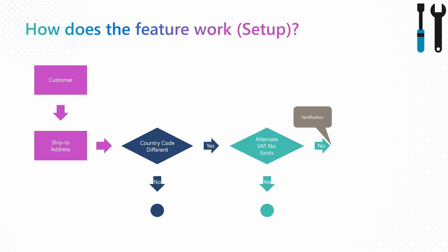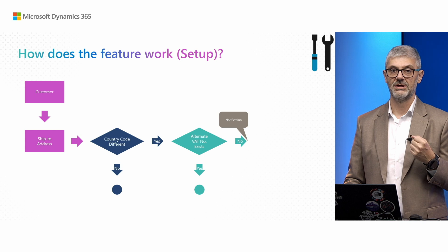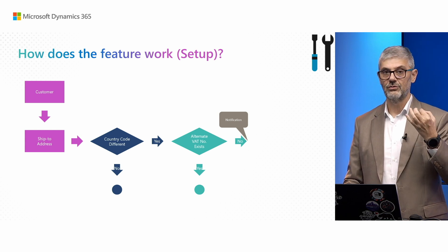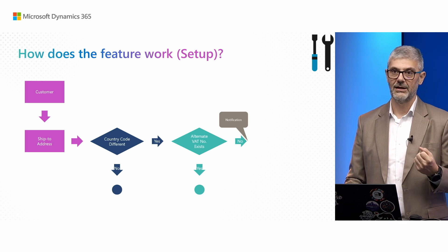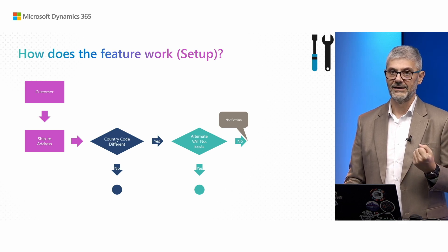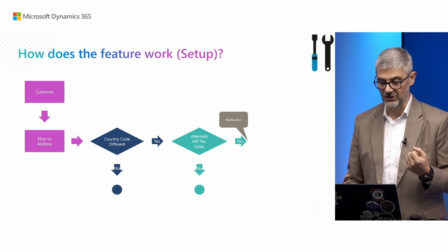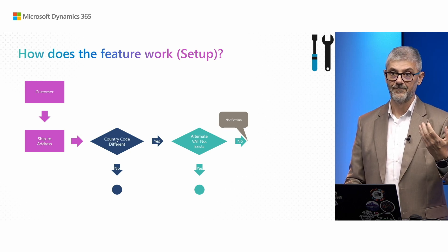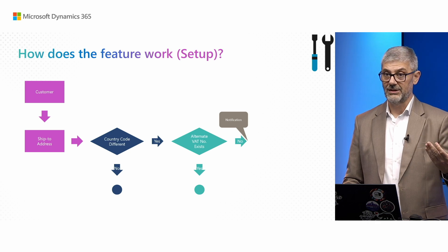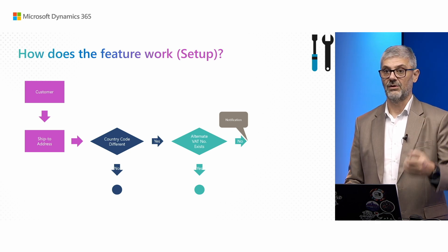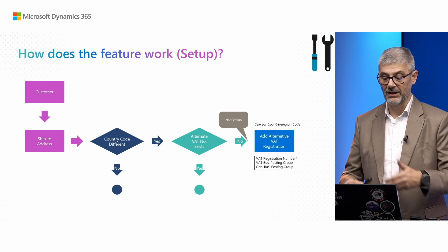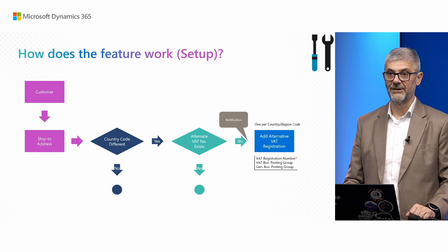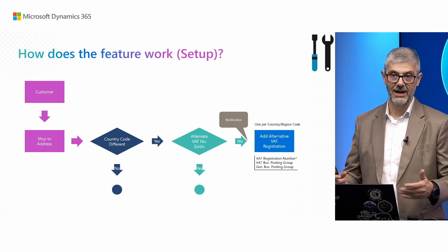If you did not have an alternative VAT number configured at that moment, you will be notified. You will get a small notification on your card saying that you should create a new alternative VAT registration. You can decide whether you want to, because by your rules it may not be necessary. But if yes, you just confirm and the system will open the alternative VAT registration where you can enter the VAT registration number and posting groups.